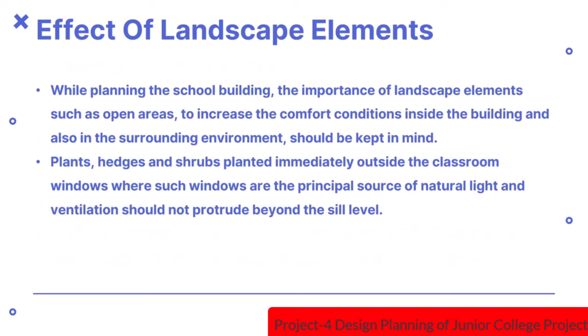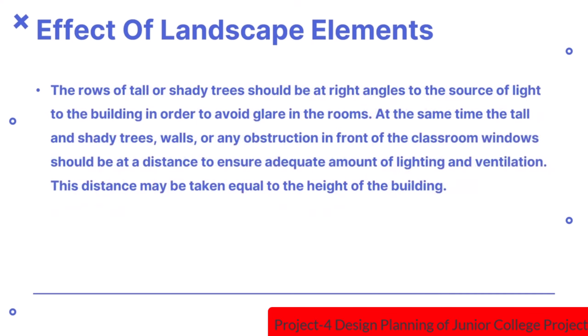The site should preferably be at a quiet place away from noise and pollution sources such as cinemas, factories, and shopping centres. Regarding the effect of landscape elements: while planning the school building, the importance of open areas to increase comfort conditions inside and surrounding the building should be kept in mind. Plants, hedges, and shrubs planted immediately outside classroom windows should not protrude beyond the sill level. Rows of tall or shady trees should be at right angles to the source of light to avoid glare. Tall trees, walls, or obstructions in front of classroom windows should be at a distance equal to the height of the building to ensure adequate lighting and ventilation.